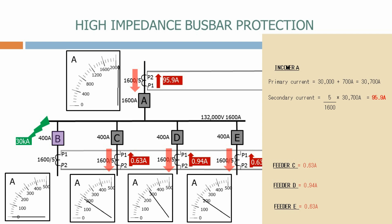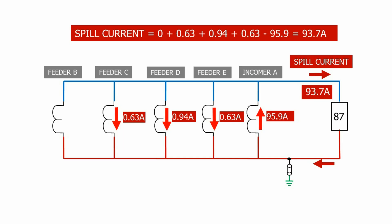Looking at our equivalent circuit again, this time all of the feeders are still simply carrying their load current, but the incomer is carrying 95.9 amps. Therefore, the current is no longer balanced. The spill current is 93.7 amps.